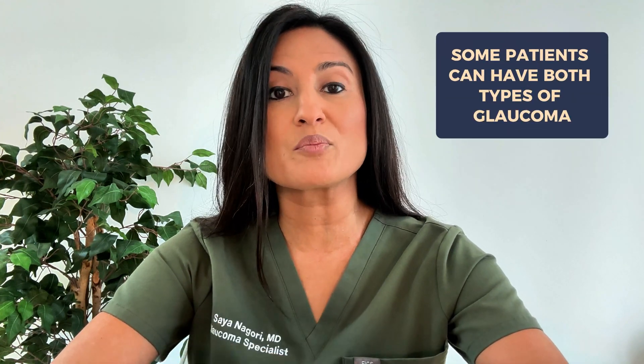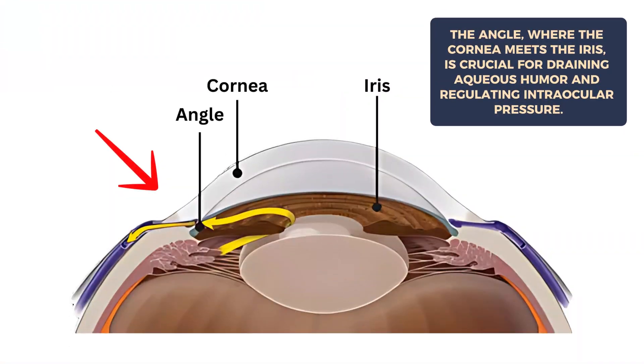It's also important to know that some patients can even have both types of glaucoma, and we'll get into that a little bit later. So first, let's talk about the angle of the eye — what is it and why does it matter? The angle of the eye is where the cornea, which is the clear part on the front of the eye, meets the iris, which is the colored part of the eye. This angle is crucial for the eye's drainage system, which regulates intraocular pressure by allowing the aqueous humor to flow out of the eye.